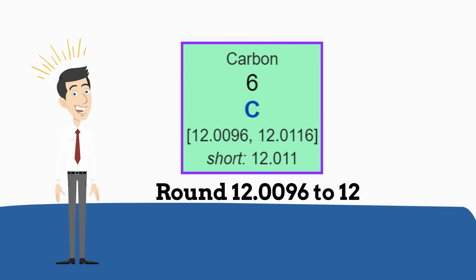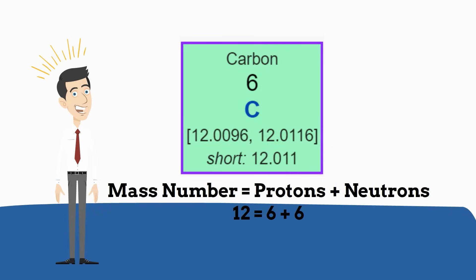Then you can use the formula: mass number equals protons plus neutrons. So you have a mass number of 12. You have 6 protons, so you need 6 neutrons.